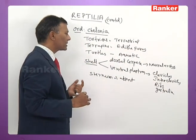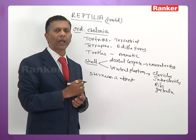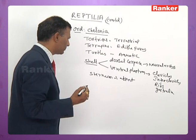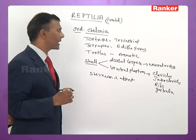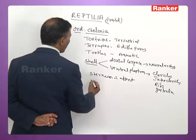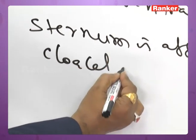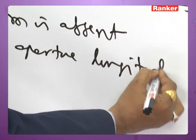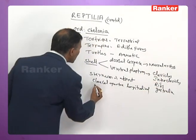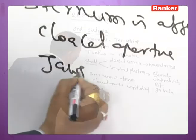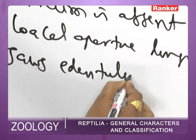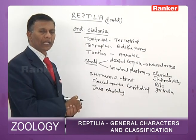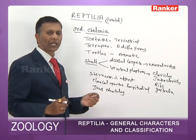The carapace is externally covered by cornified epidermal scales. Another unique character of Chelonians is that the cloacal aperture is longitudinal. The jaws are edentulous — Chelonians are the reptiles without teeth — and the jaws are covered by a horny sheath that helps in mastication.